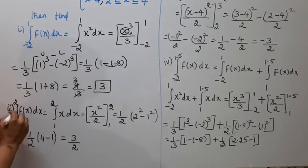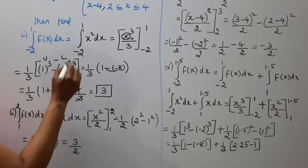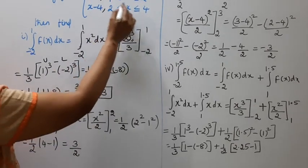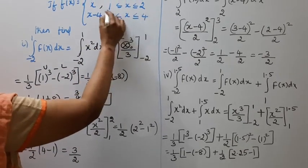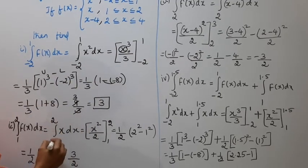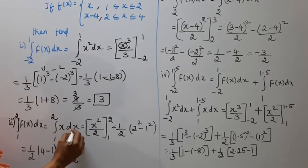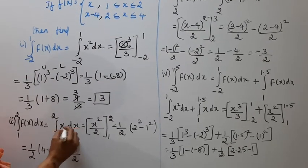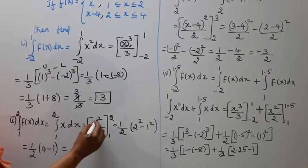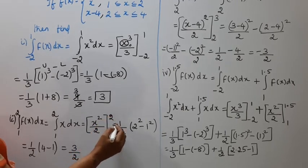Second subdivision: integration from 1 to 2 of f of x dx. From 1 to 2, f of x is x. So we evaluate the integral from 1 to 2 of x dx. Integrating x gives x squared by 2, evaluated from 1 to 2.